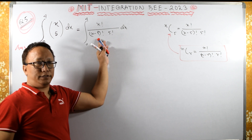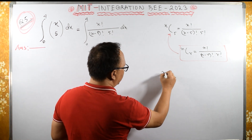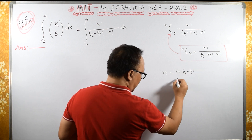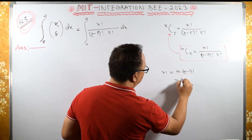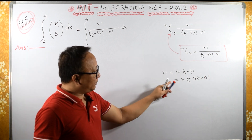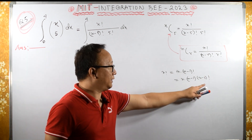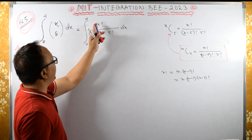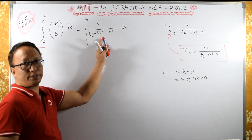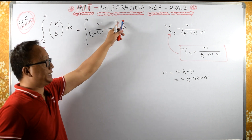Now remember the factorial notation: N factorial is the same as N times (N-1) factorial, which is the same as N times (N-1) times (N-2) factorial, and we can decrease until we reach the last number. Similarly, this X factorial can be decreased down to X minus 5, so that the (X minus 5) factorial gets cancelled.